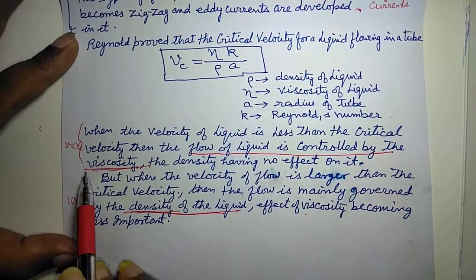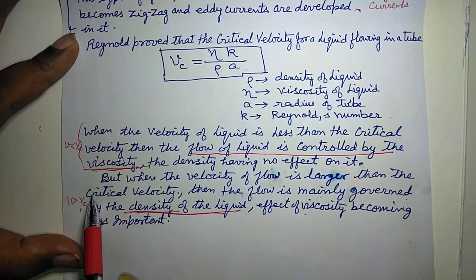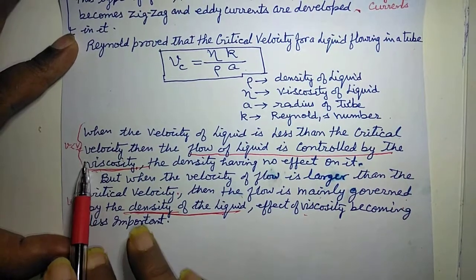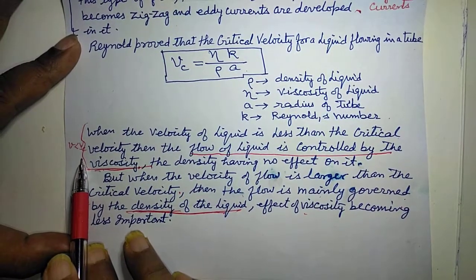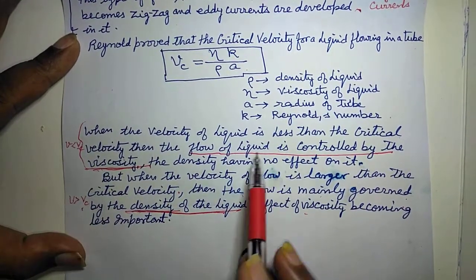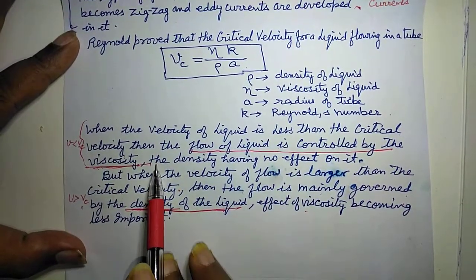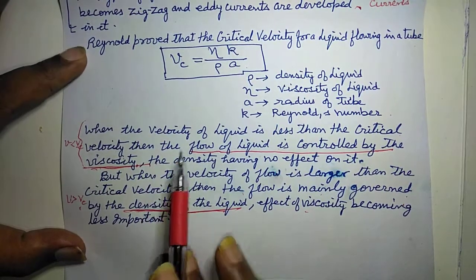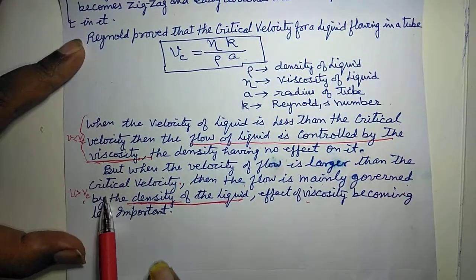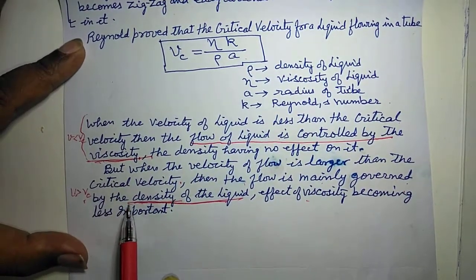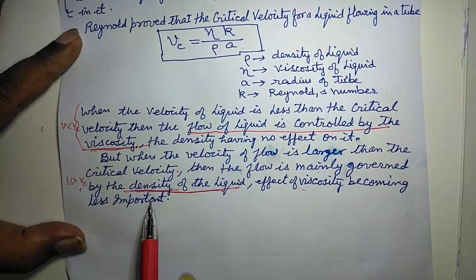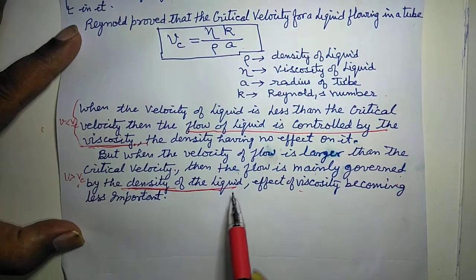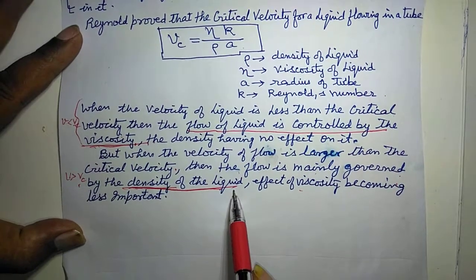Toh agar streamlined flow hai, toh uss samay flow of liquid is controlled by viscosity. Aur agar turbulent flow hai, then flow of liquid is controlled by the density of the liquid.